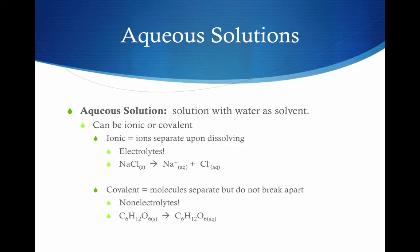The solute can be ionic or covalent. Ionic solutes separate or dissociate upon dissolving to produce electrolytes — solutions that conduct electricity. Here you see a dissociation equation for NaCl in water, where the ions have separated or dissociated. Covalent substances, however, do not dissociate — the molecules separate, but they do not break apart. Therefore these solutions are non-electrolytes; there are no charged particles in solution. Here we see an equation for the dissolving of sugar: C6H12O6 solid becomes C6H12O6 aqueous. Notice the atoms have stayed together — the molecule does not come apart.